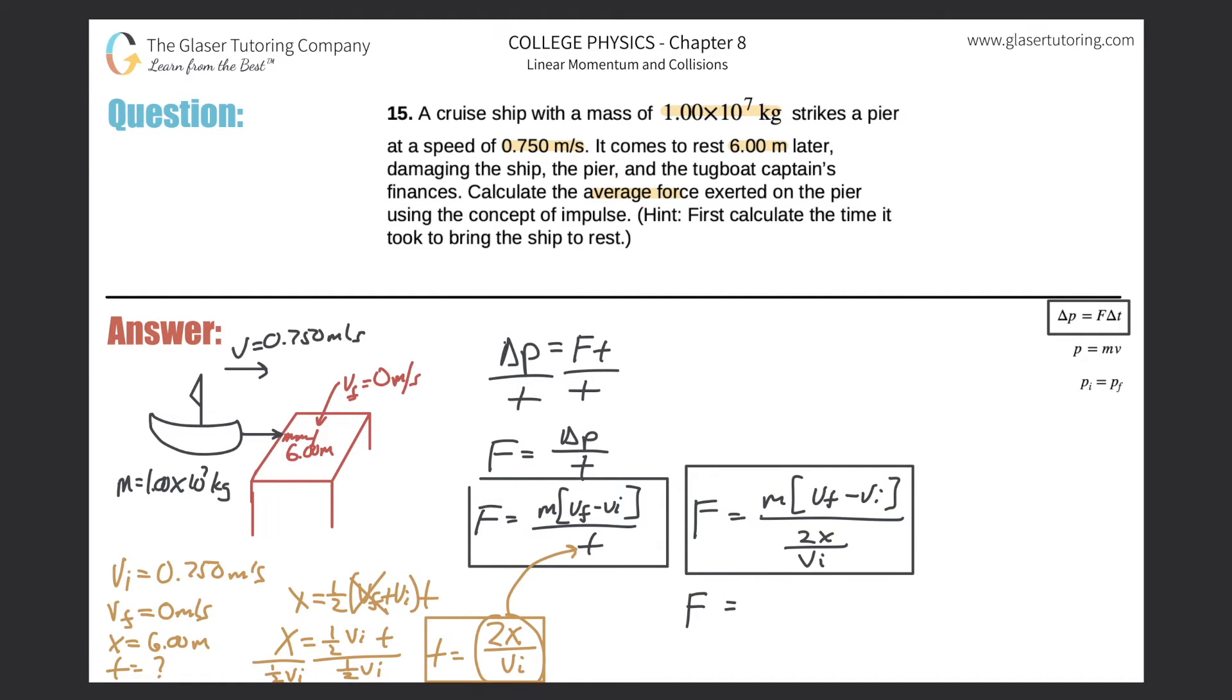Let's just plug in. The mass of the ship was 1.00 times 10 to the 7. The final velocity of the ship was 0. The initial velocity of that ship was 0.750. All divided by 2 times the displacement, which was 6 meters, all divided by the initial velocity, 0.750. Let's just plug it on in, and let's find the force.